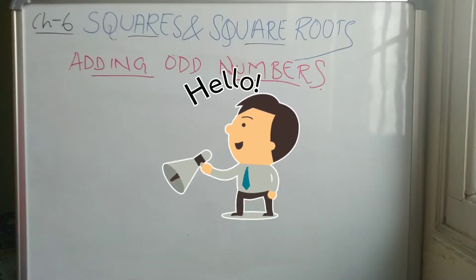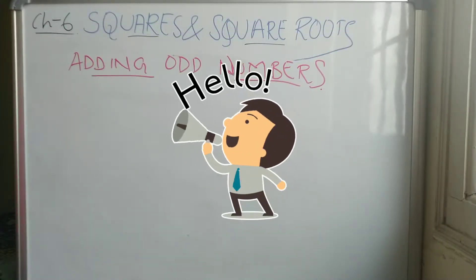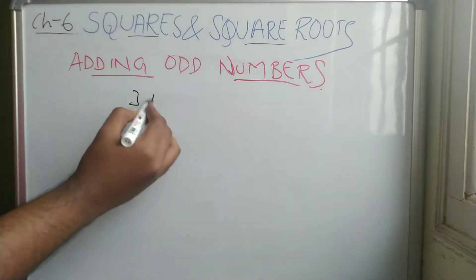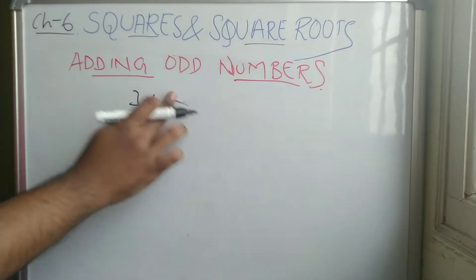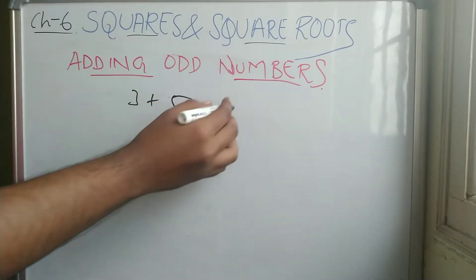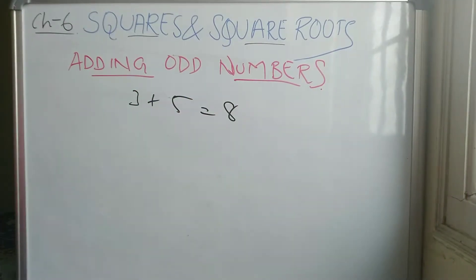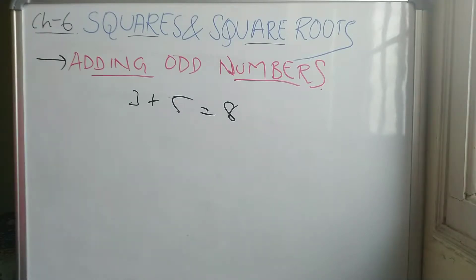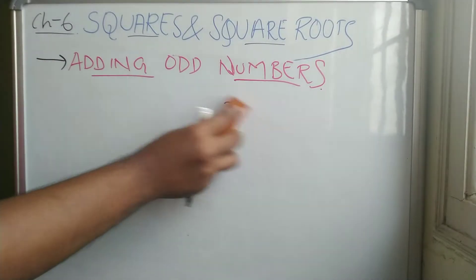In this video we are going to discuss how to add odd numbers. Adding odd numbers — for example, 3 plus 5 gives 8. Adding odd numbers means starting from the first odd number, which is one.